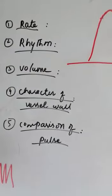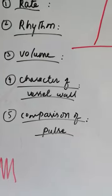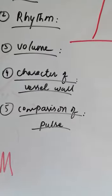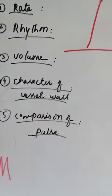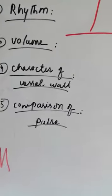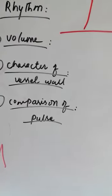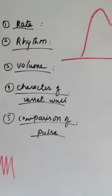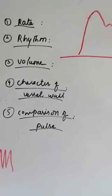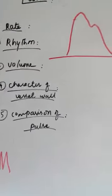Regarding the character of the vessel wall — normally it is soft, but in old age the vessel becomes very hard, like a pipe, because you are palpating the pulse against the background of the bone. You compare the right and left radial pulses, and also the radial pulse with the femoral pulse. Radio-femoral delay is present in coarctation of the aorta. To describe your findings, say: 'The pulse is 72 beats per minute, it is of regular rhythm, it is of good volume, and the vessel wall was normal. There is no radio-radial delay or radio-femoral delay.'